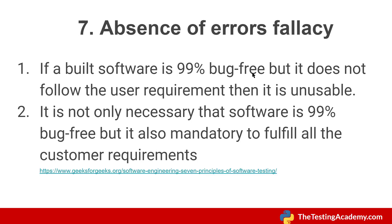The seventh principle is the absence of error fallacy. It basically says that if a built software is 99% bug-free but does not follow user requirements, then it is unusable. If you are developing software that is perfect but not aligned with user requirements, there is no need for that software.